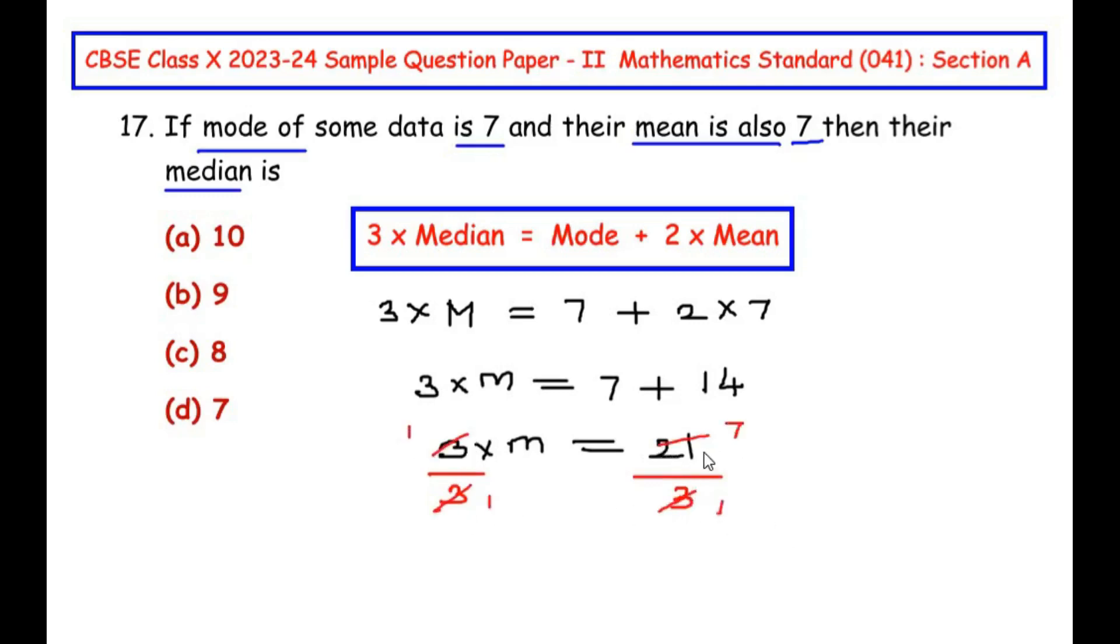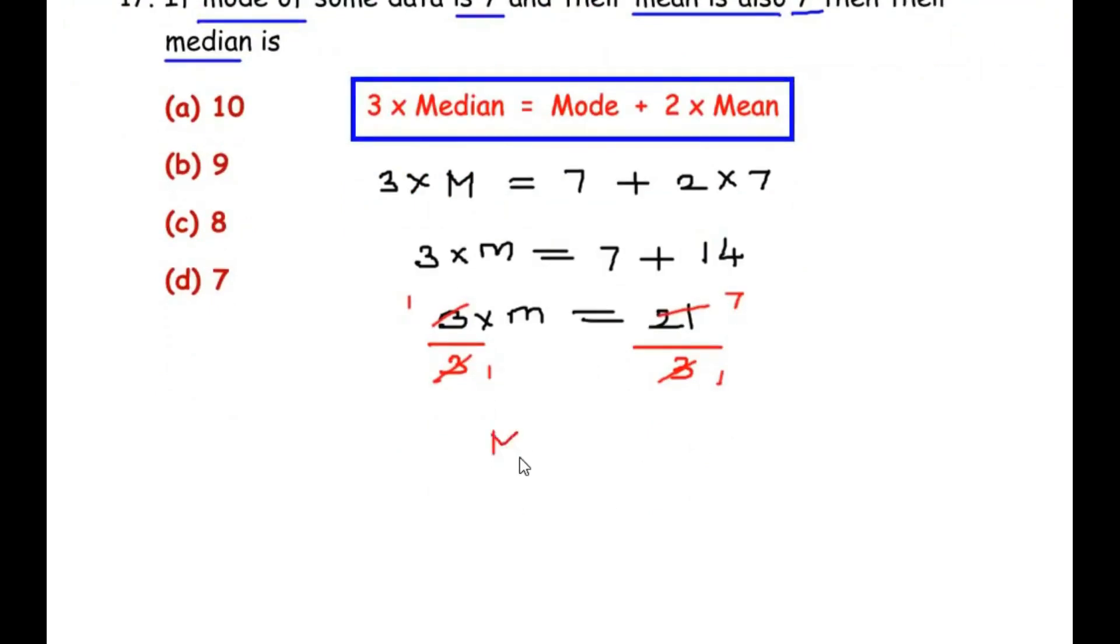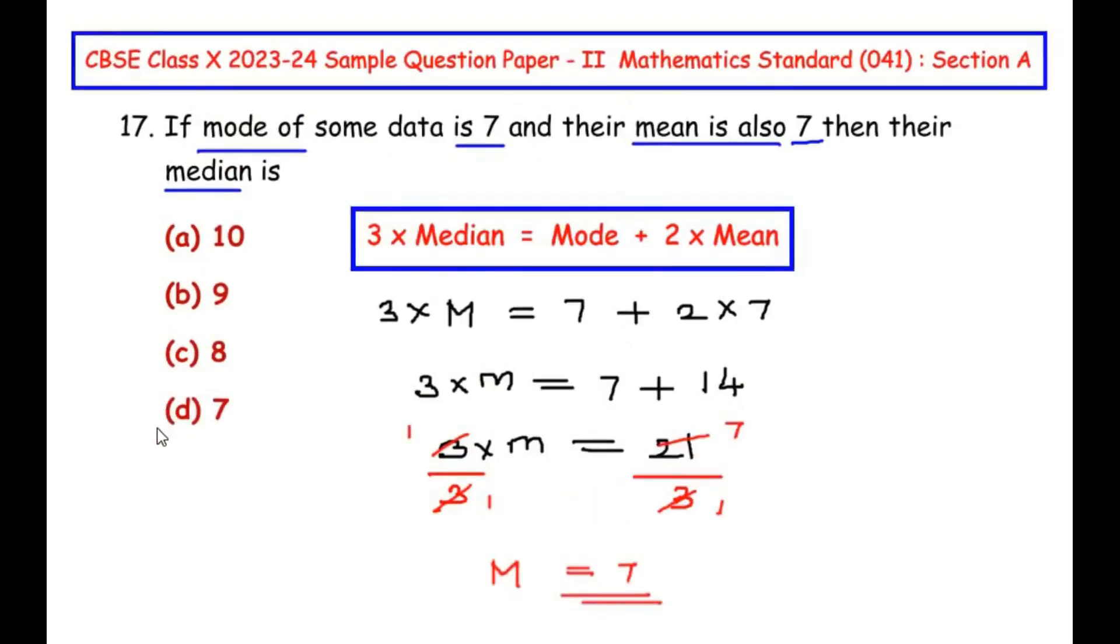So we got the median as 7. Let us see if it is in the options. So here we have option D. So remember this formula which relates the median, mode, and mean. Similarly they can ask you to find the mode or the mean by changing the values.